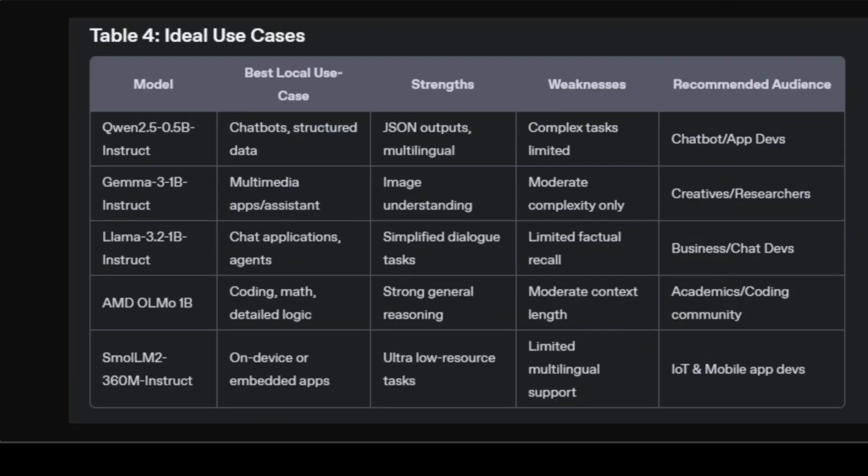Now for use cases — everyone has their own unique case, so you need to think through what features matter most. SmallLM2 is designed for constrained devices and applications demanding little power or memory. AMD OLMo excels substantially in math, coding, and logic, making it ideal for software developers and academic users. Gemma is ideal for visual and creative use cases due to multimodal capabilities, as well as general tasks where quality is paramount. Llama is highly suitable for building business chatbots or dialogue-based applications, whereas Qwen works best for structured interactions and multilingual chatbot applications, especially bilingual Chinese and English with structured data output.